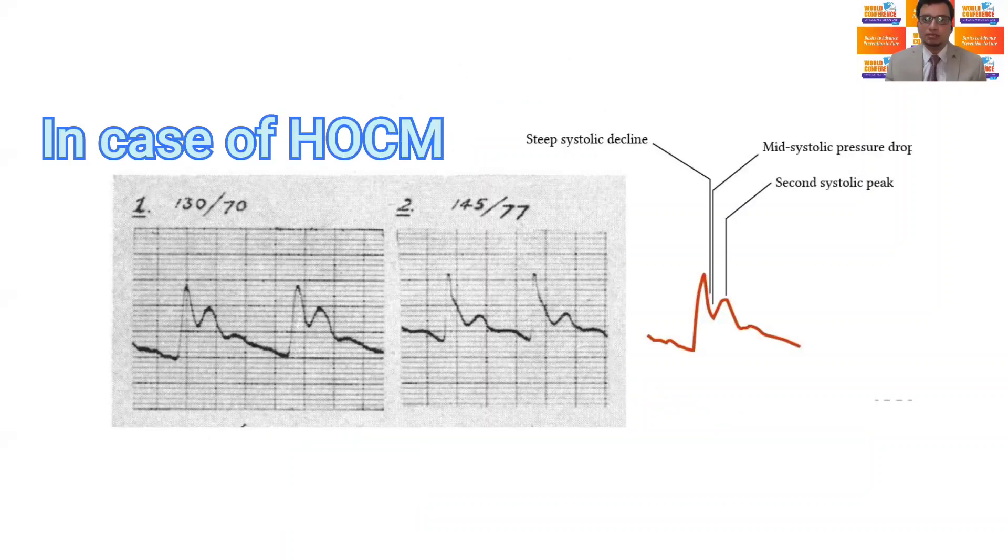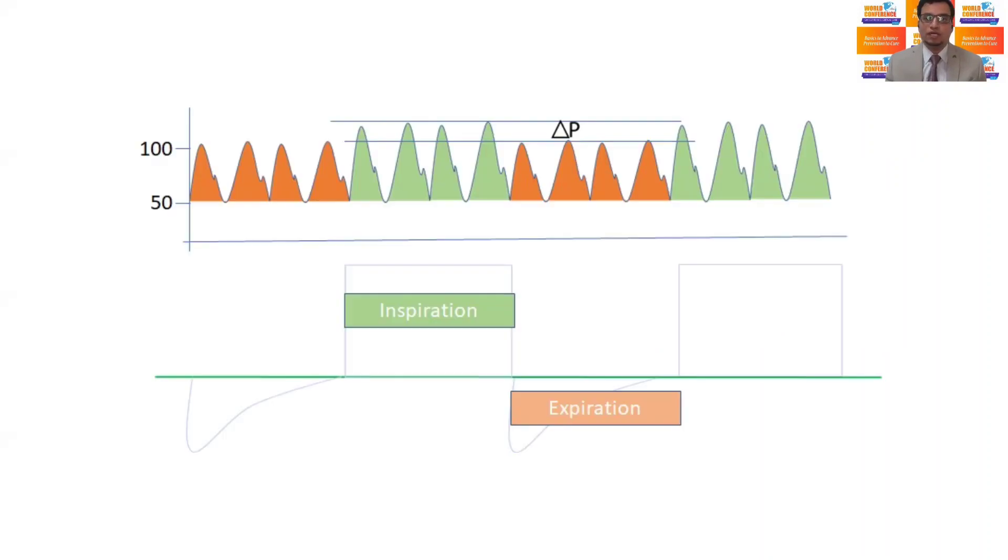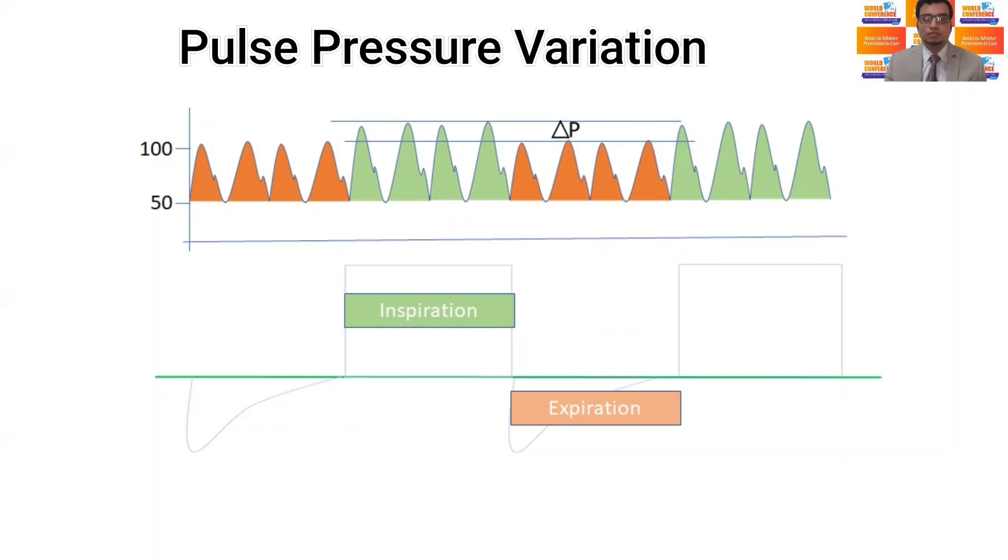Sometimes upstroke has double peaks, which are commonly seen in hypertrophic obstructive cardiomyopathy. The most important use of arterial waveform analysis is in the detection of the pulse pressure variation, resulting from intermittent positive pressure ventilation in a patient who is on mechanical ventilator, without any spontaneous respiratory effort.